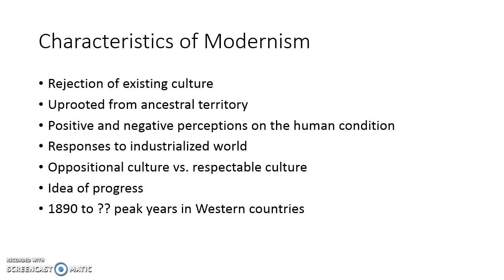What are the characteristics of modernism? We have rejection of existing culture and a rebellious nature. We have people uprooted from ancestral territory, from the place of origin where maybe they've lived for 25 generations. There's an outpouring of positive and negative perceptions on the human condition, much of it in response to the industrialized world, focused more on city life than the rural farm country we saw in the Romantic period.